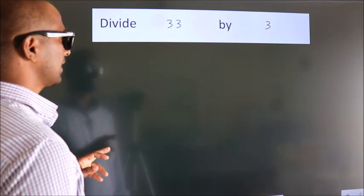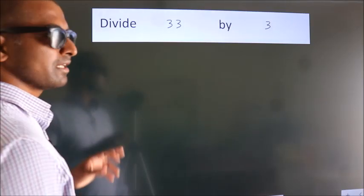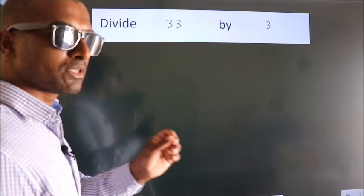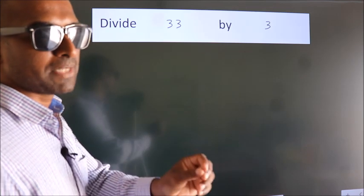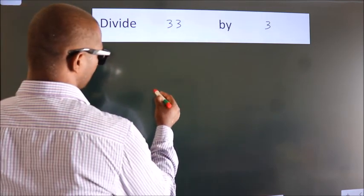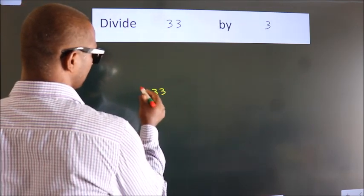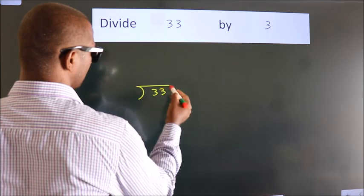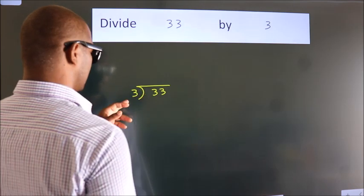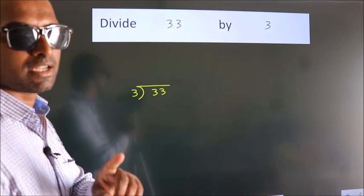Divide 33 by 3. To do this division, we should frame it in this way: 33 here, 3 here. This is your step 1.